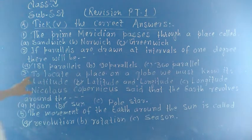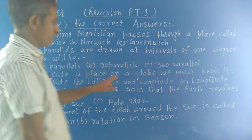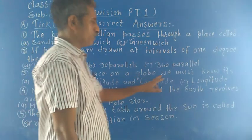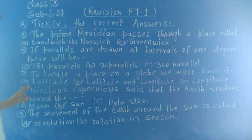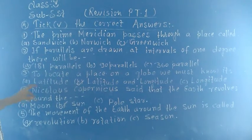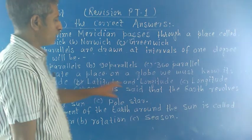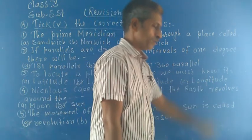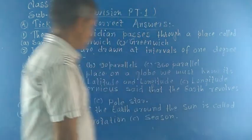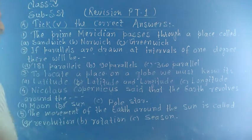Question number 3: To locate a place on a globe, we must know. Options: A, latitude; B, longitude and latitude; C, longitude. Right answer is latitude and longitude.